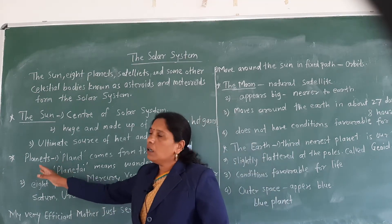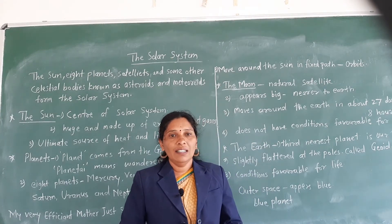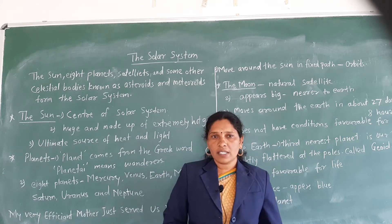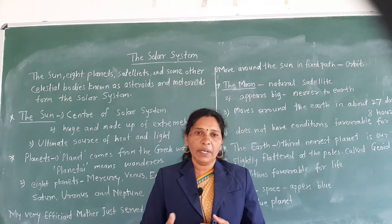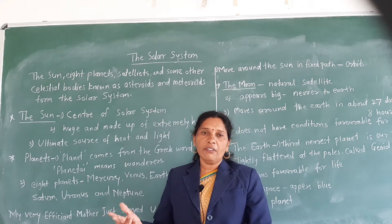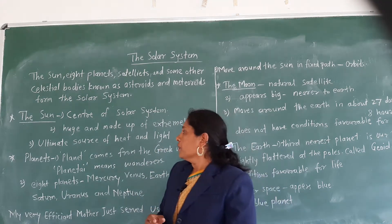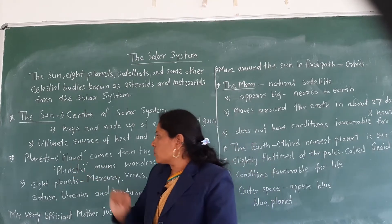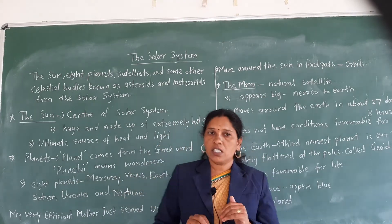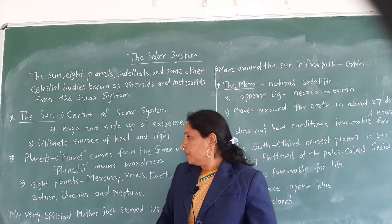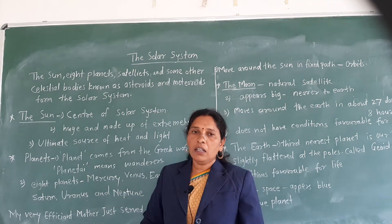Next we will see about the planets. Planets do not have their own light. Some planets are made up of rocks, and some planets that are very far from the sun are very huge and made up of hot gases. The word 'planet' comes from the Greek word 'planetite,' which means wanderers — that is, travelers.